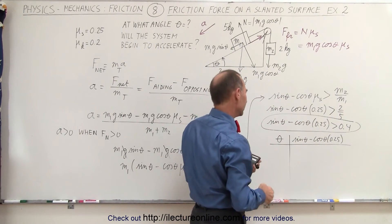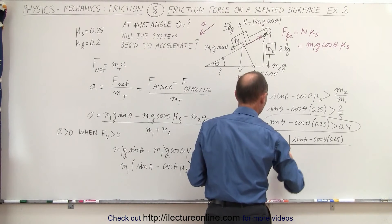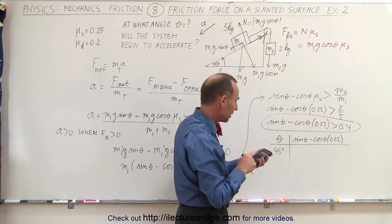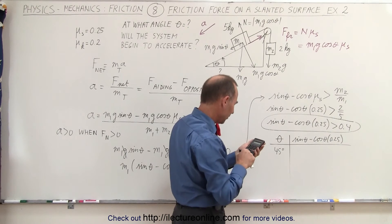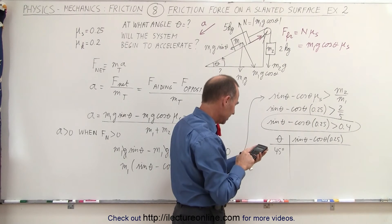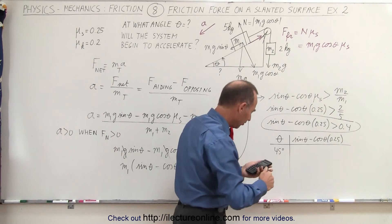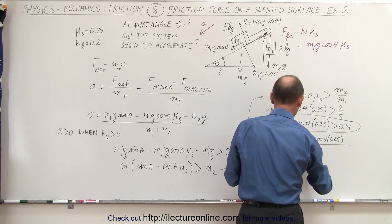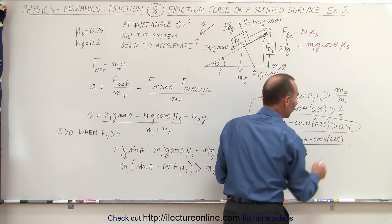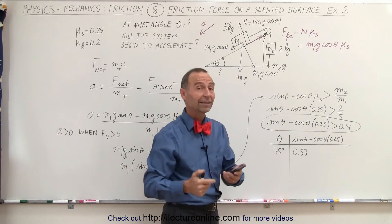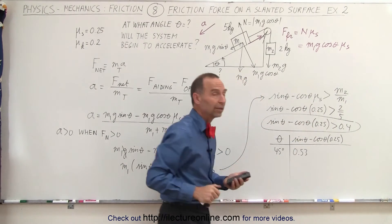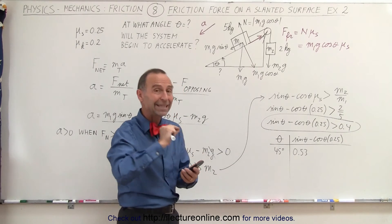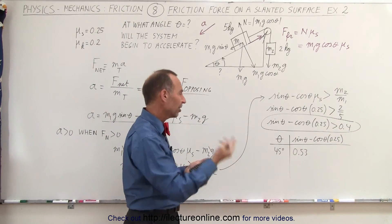Let's try 45 degrees. Taking sine(45) minus cosine(45) times 0.25, we get 0.53, which is larger than 0.4. So at 45 degrees we definitely have a positive net force and there will be acceleration. But we want to find the angle at which the system just begins to slide, so let's try a smaller angle — 40 degrees.